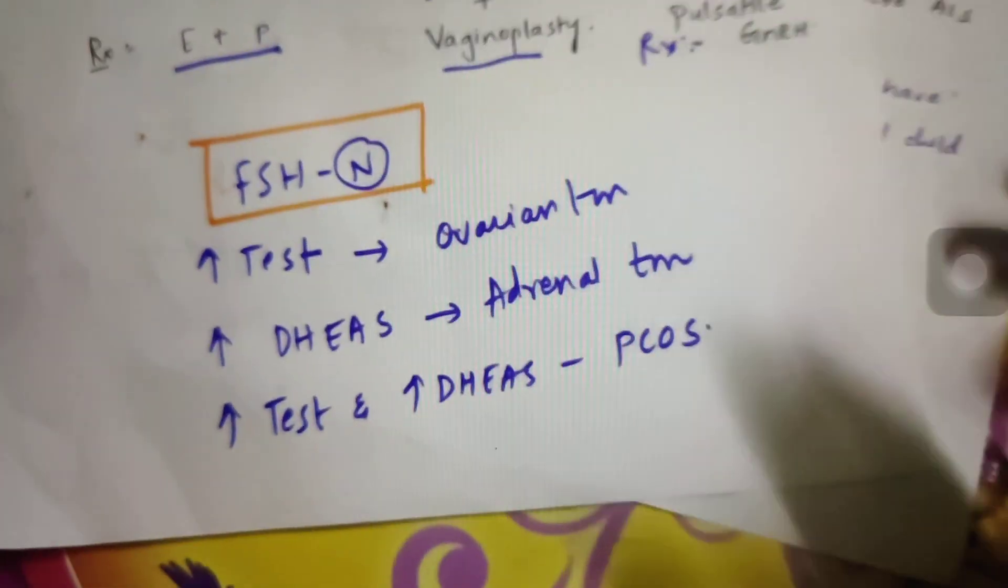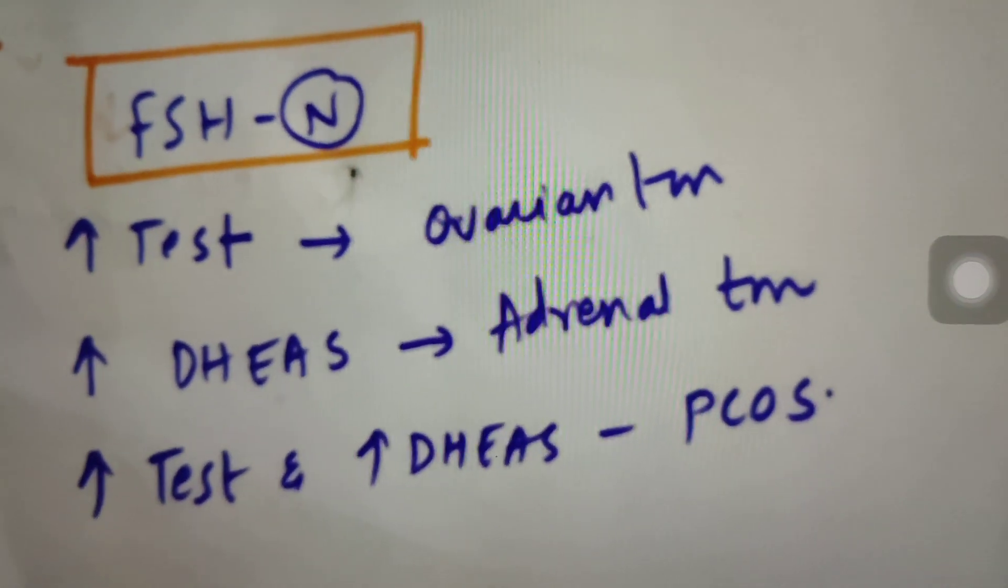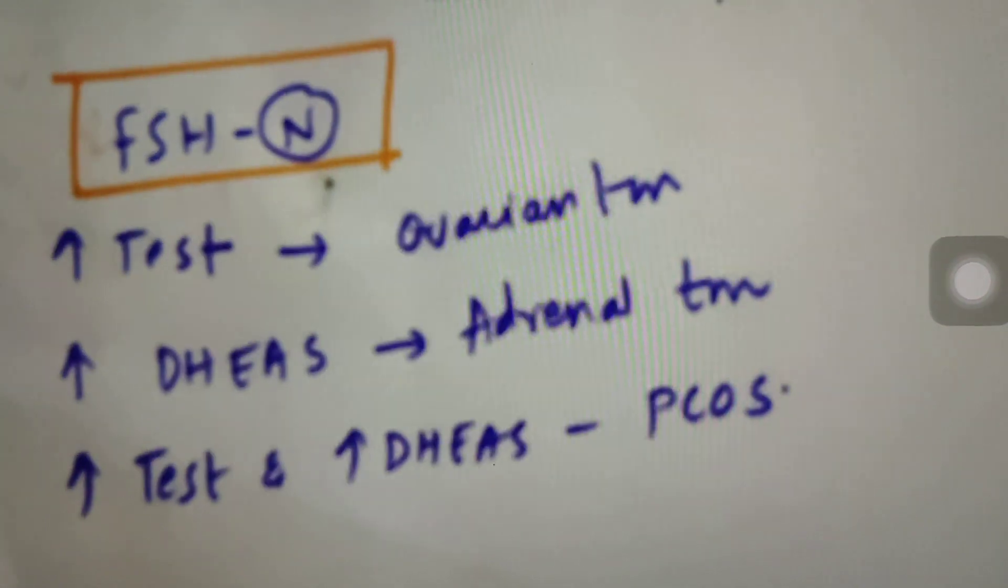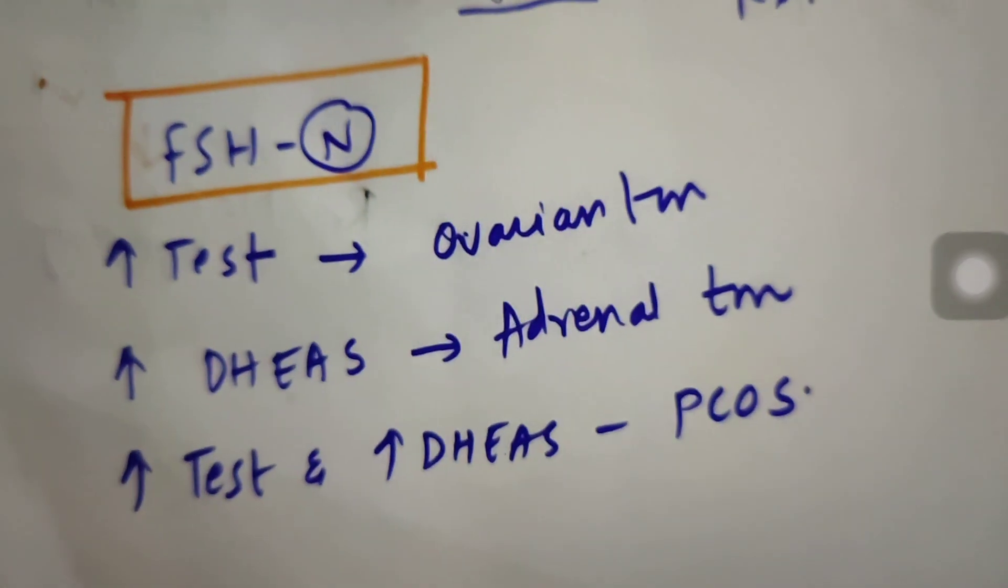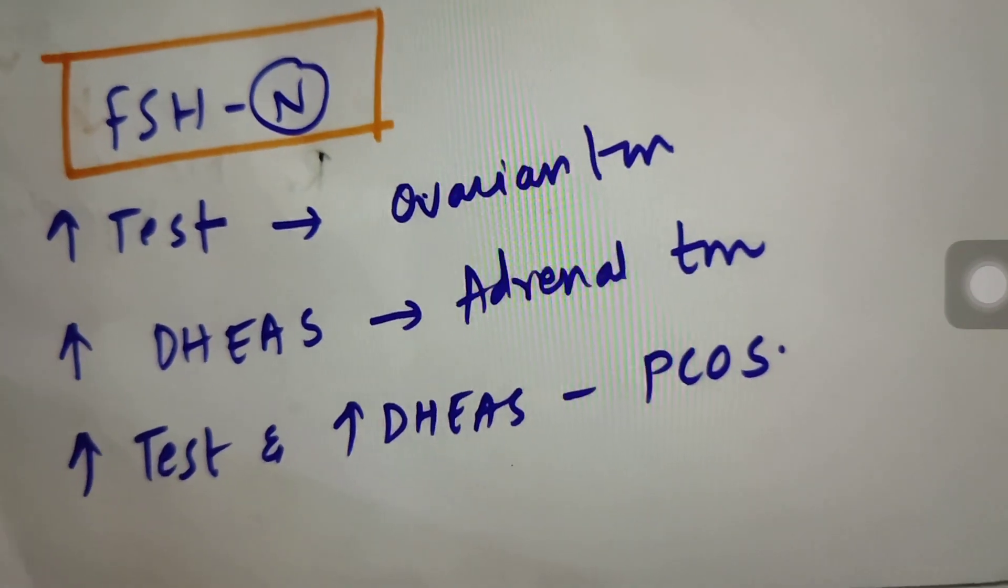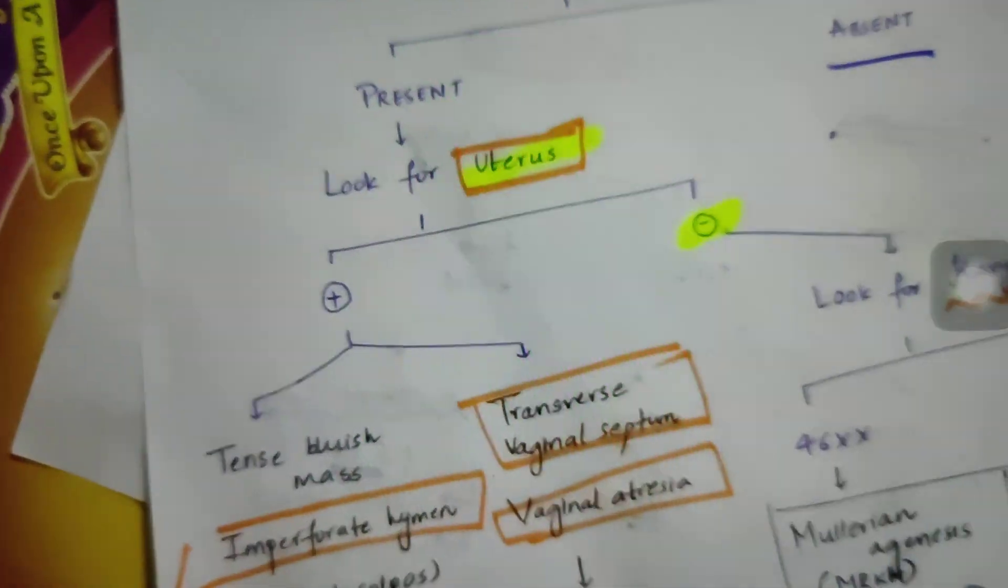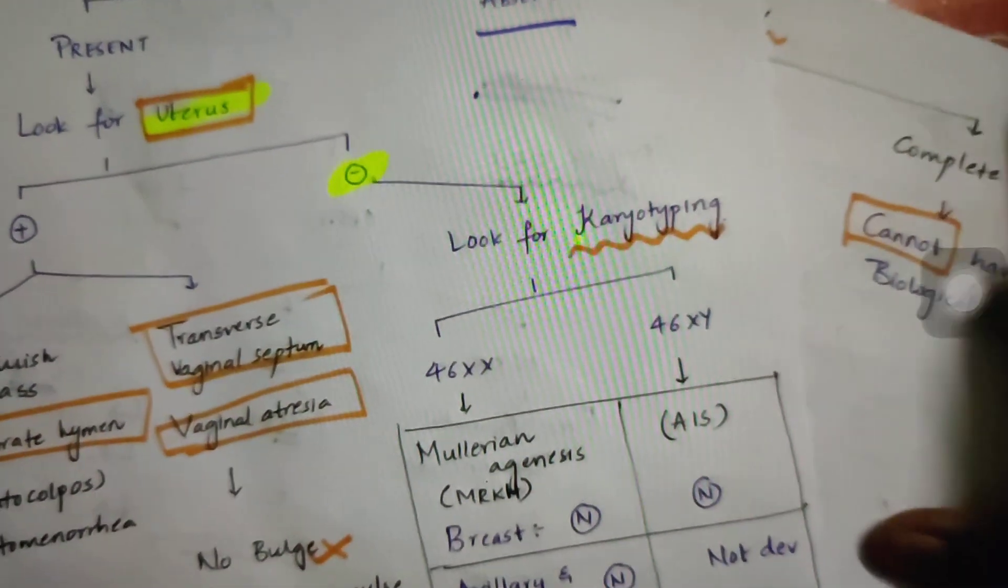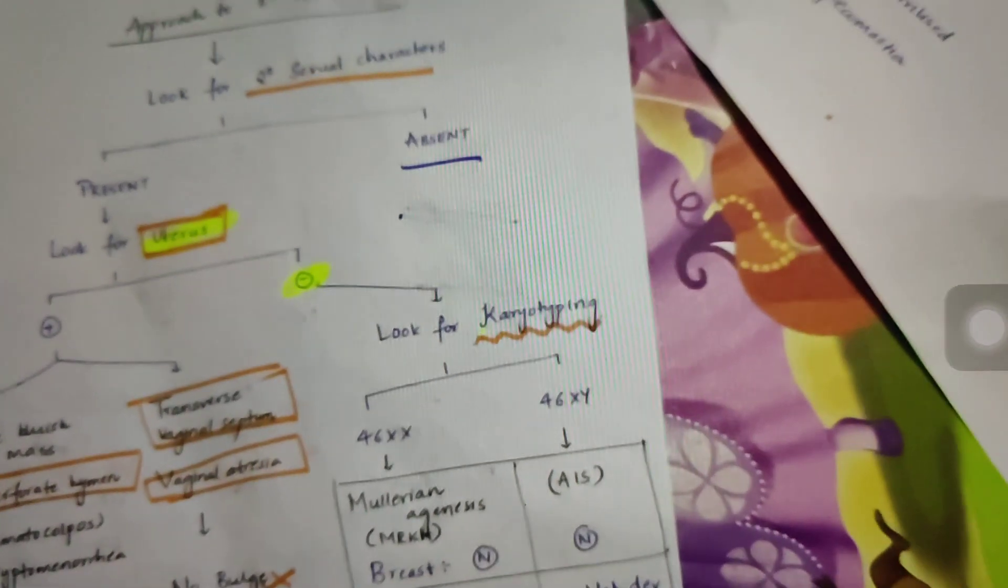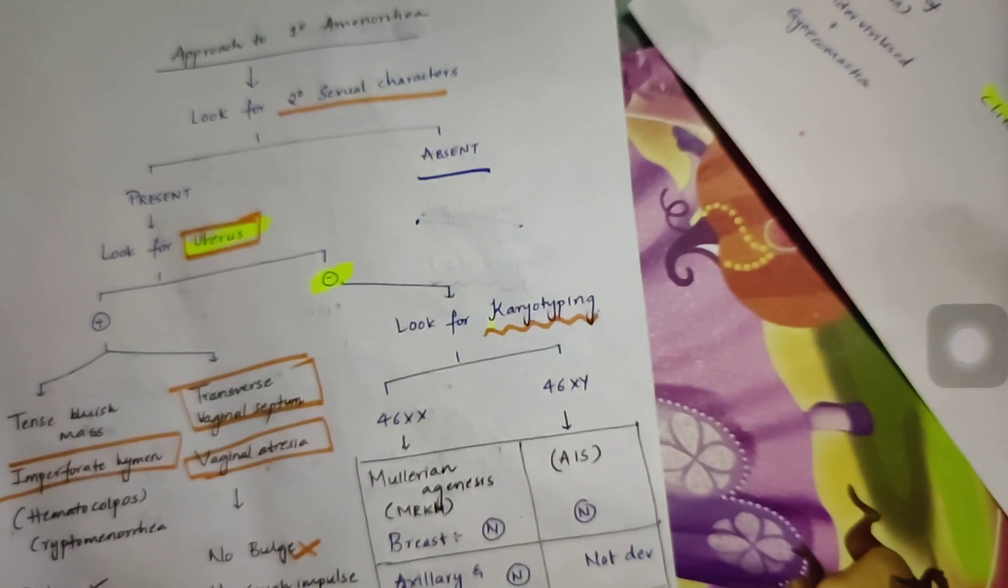Now let us discuss about few conditions where the hormonal study comes out to be normal, like FSH is normal. But if testosterone is increased, then consider ovarian tumor. If DHEAS hormone is increased, then consider adrenal tumor. If testosterone and DHEAS both are increased, then PCOS condition needs to be considered. So I think this is all you need to know about primary amenorrhea. This helped me a lot to solve many questions from this topic. So try to solve few questions after this video and add any important points that you find in the explanations given below you. Thank you.